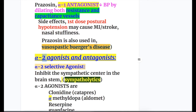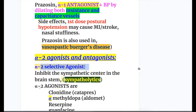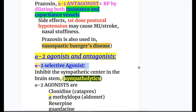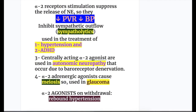Selective alpha-2 agonists inhibit the sympathetic center in the brainstem, so they are sympatholytics. Examples of alpha-2 agonists include clonidine, ketanserin, alpha-methyldopa (aldomet), reserpine, and guanfacine.